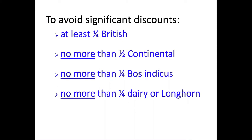If you're raising cattle to sell calves at your local auction market, you want to avoid significant discounts from a breed standpoint. You want those calves to be at least a quarter British — think Hereford, Angus, Red Angus — no more than half Continental, no more than a quarter Bos Indicus, and no more than a quarter Dairy or Longhorn. That won't always mean the highest selling calves, but you'll be very desirable to a large group of buyers and avoid significant discounts.